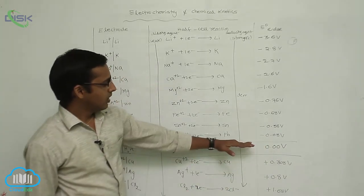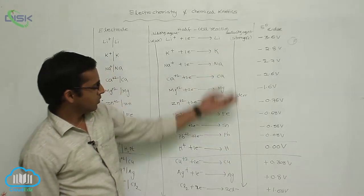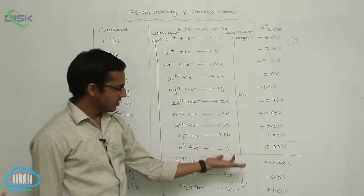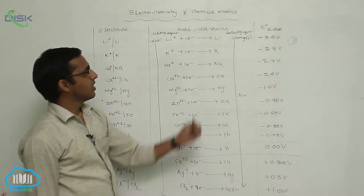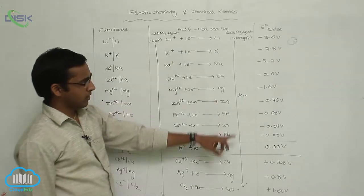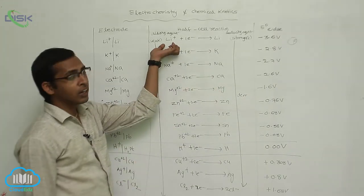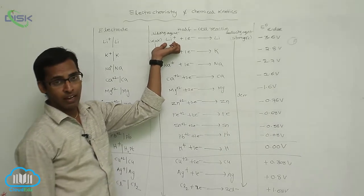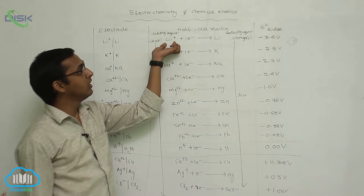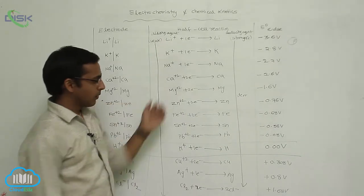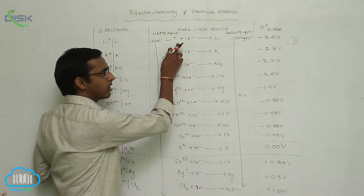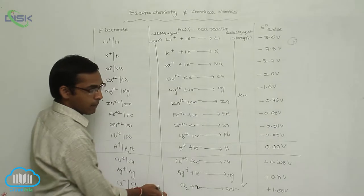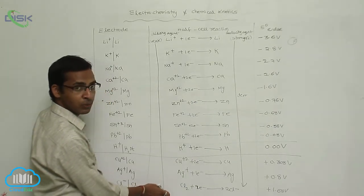Based on this, metals above hydrogen form the hydrogen-above-metal series, and metals below hydrogen form the hydrogen-bottom series. Metals above hydrogen are highly electropositive elements, meaning they are weakly electronegative. Metals below hydrogen are highly electronegative elements.